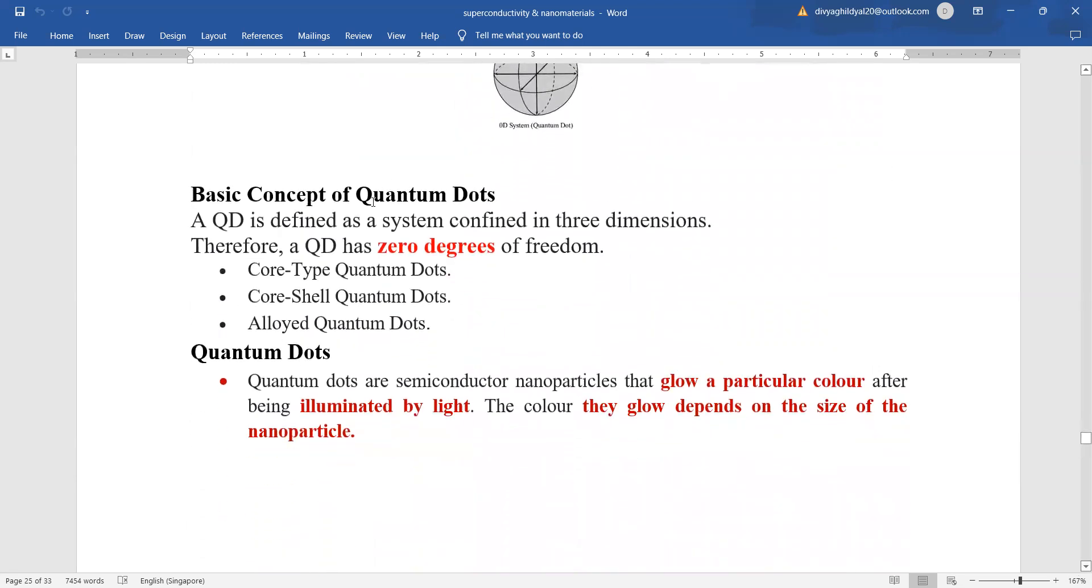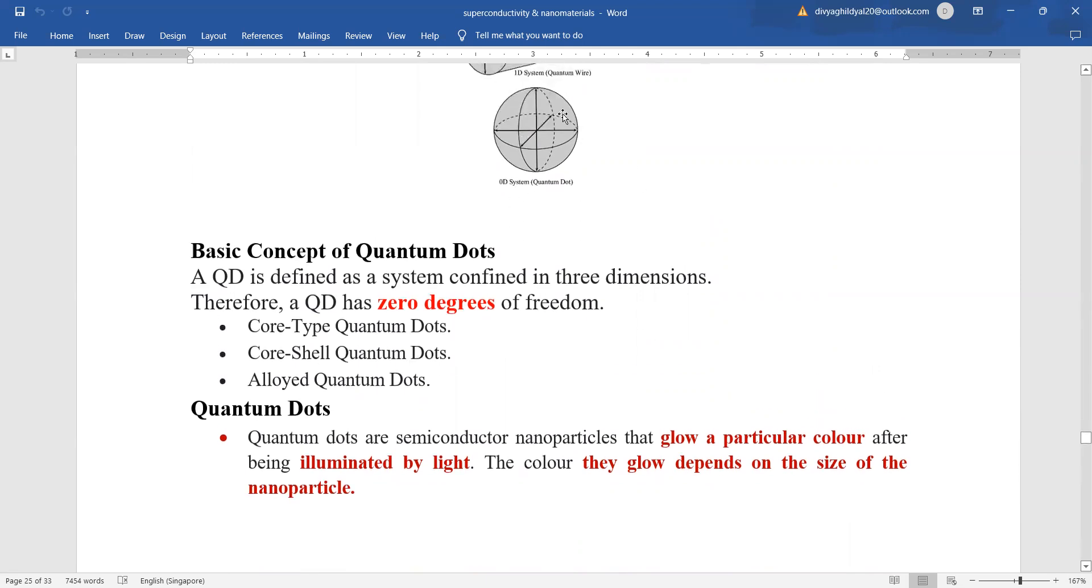What are the basic concepts of quantum dots? A quantum dot is defined as a system which is confined in three dimensions. Here, you can see this is a quantum dot and it has zero degrees of freedom. Three main types are the core type, core shell type and alloyed quantum dot. In general, you just need to know the basic properties and applications for your syllabus.